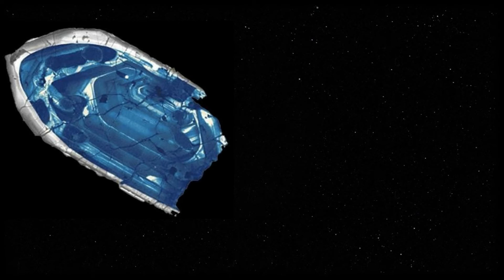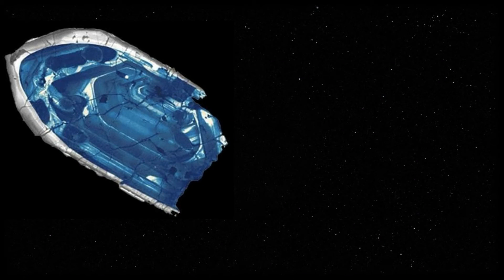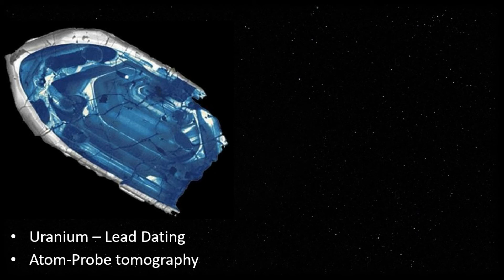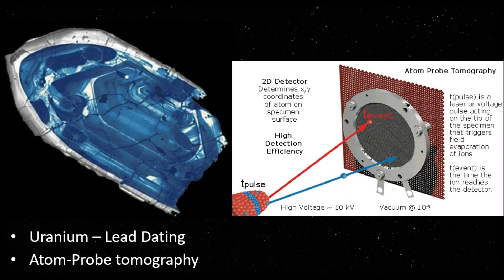This figure shows a 4.4 billion year old zircon crystal fragment, believed to be the oldest piece of Earth ever found. To determine its age, scientists first used radioactive decay of uranium to lead. Because this technique might give a false date due to possible movement of lead atoms within the crystal, researchers also used atom probe tomography to verify the finding. This technique identifies individual atoms of lead and determines their mass, confirming the zircon was indeed 4.4 billion years old.